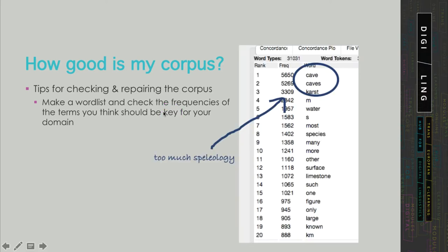For example, I was compiling a corpus for Karstology, yet my word list shows cave and caves as the two most frequent items and Karst comes only third. So on the basis of this word list, I can decide that there is too much speleology — too much cave science — in my corpus.